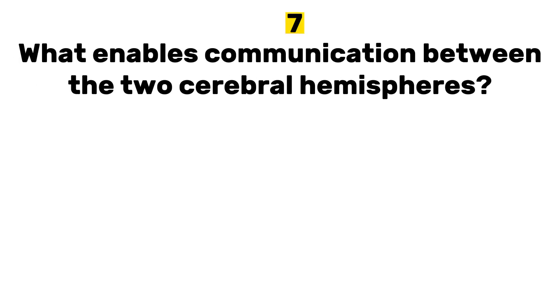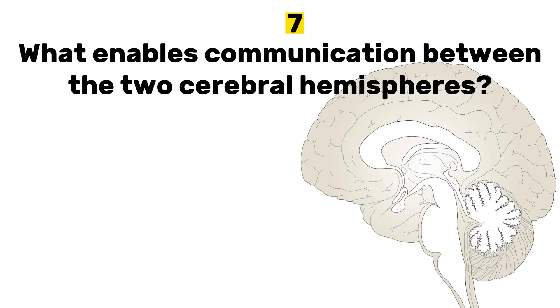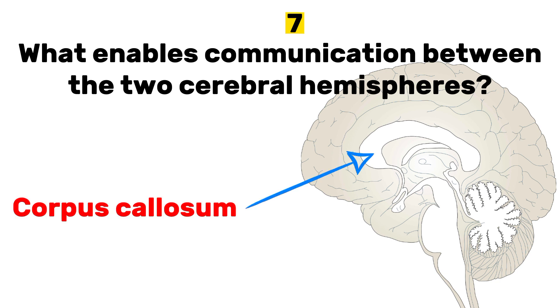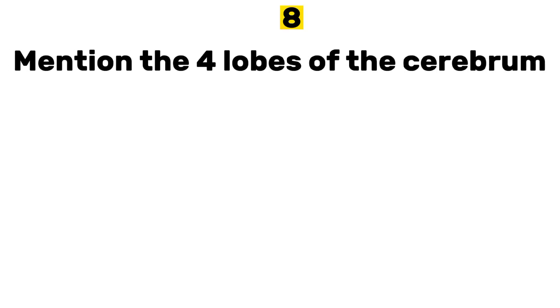Number seven: what enables communication between the two cerebral hemispheres? Answer: corpus callosum. Number eight: mention the four lobes of the cerebrum.